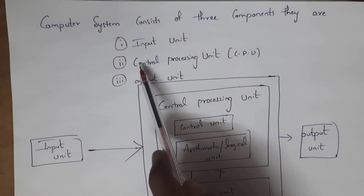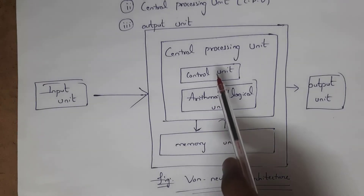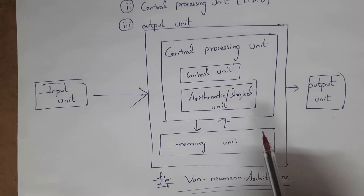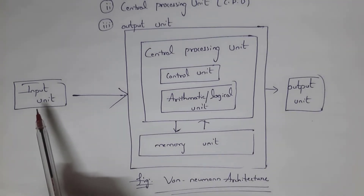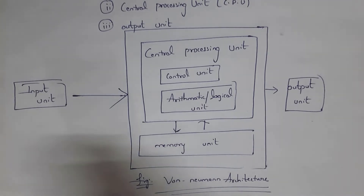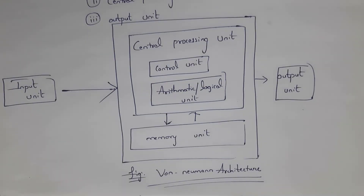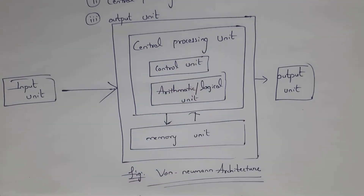A computer system consists of three components: input unit, central processing unit (CPU), and output unit. The CPU contains three sub-components: the control unit, the arithmetic and logical unit (ALU), and the memory unit. This is shown in a block diagram also called Von Neumann architecture. The input unit contains input devices like keyboard and mouse, establishing a connection between the user and the system. The CPU is considered the brain of the computer — all data processing operations are handled by it. The control unit manages all instructions received by the CPU.